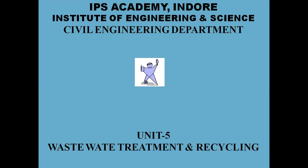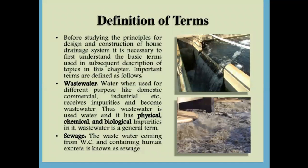Hello everyone. Today we will discuss wastewater treatment and recycling process. Unit number five: General Definitions. Before studying the principles for designing and construction of a house drainage system, it is necessary to first understand the basic terms used in the subsequent description of the wastewater topic. Wastewater is water used for different purposes like domestic, commercial, industrial, etc., which receives impurities and becomes wastewater.